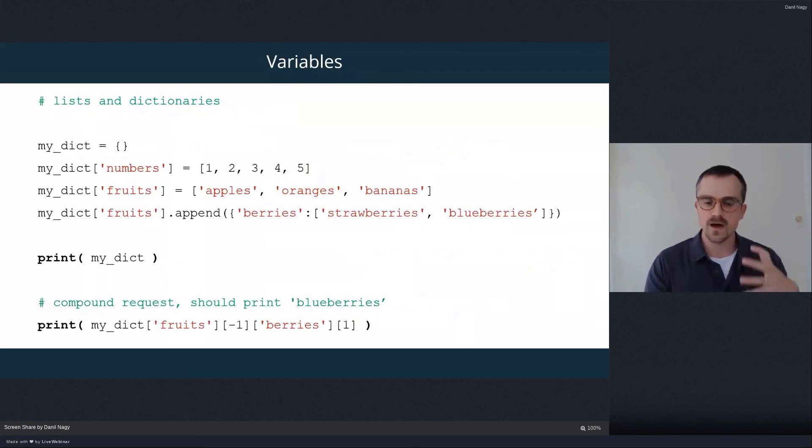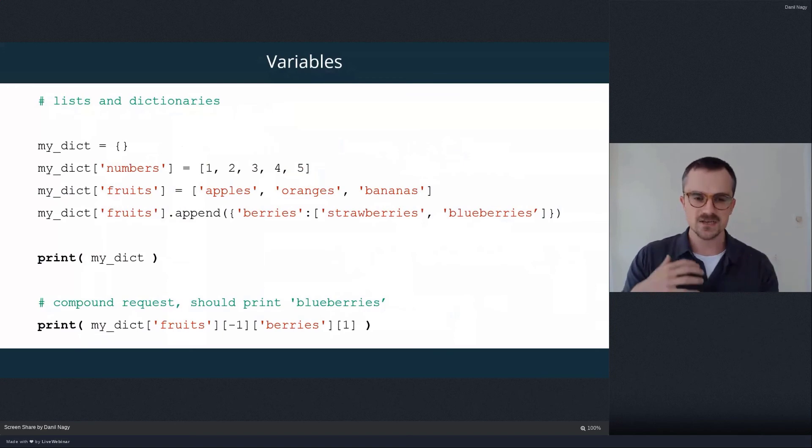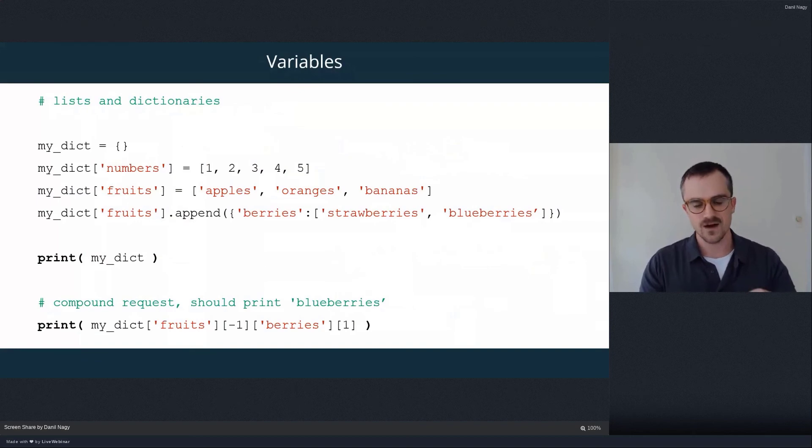So the cool thing about lists and dictionaries is that they can actually be combined together to create quite complex data structures that basically start to nest the list and dictionaries and use one or the other when it's most appropriate, depending on how we want to store and work with our data.